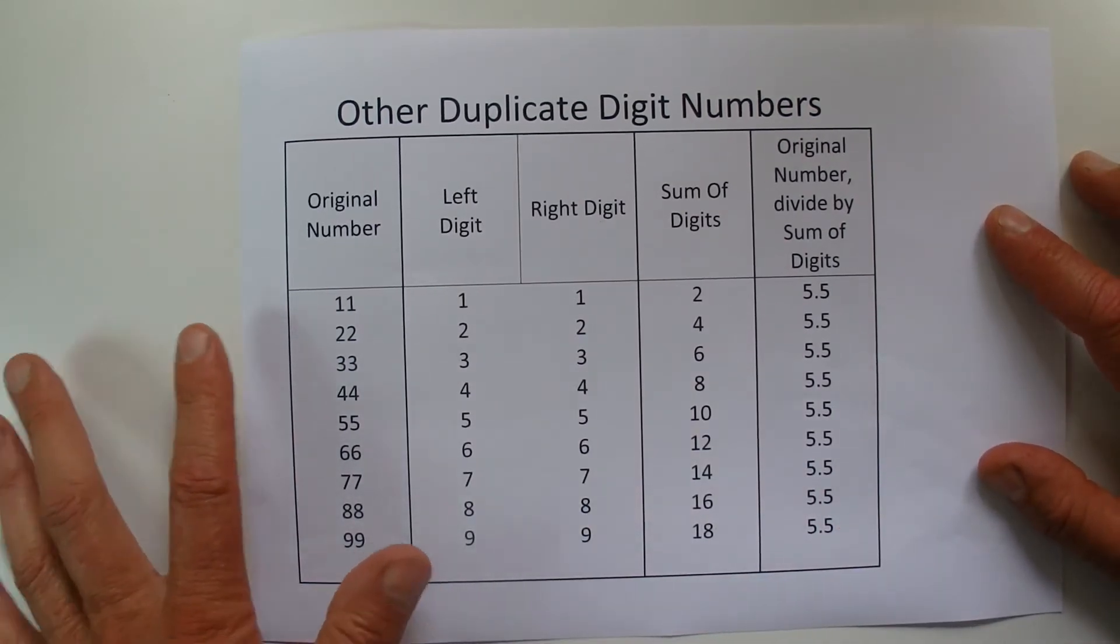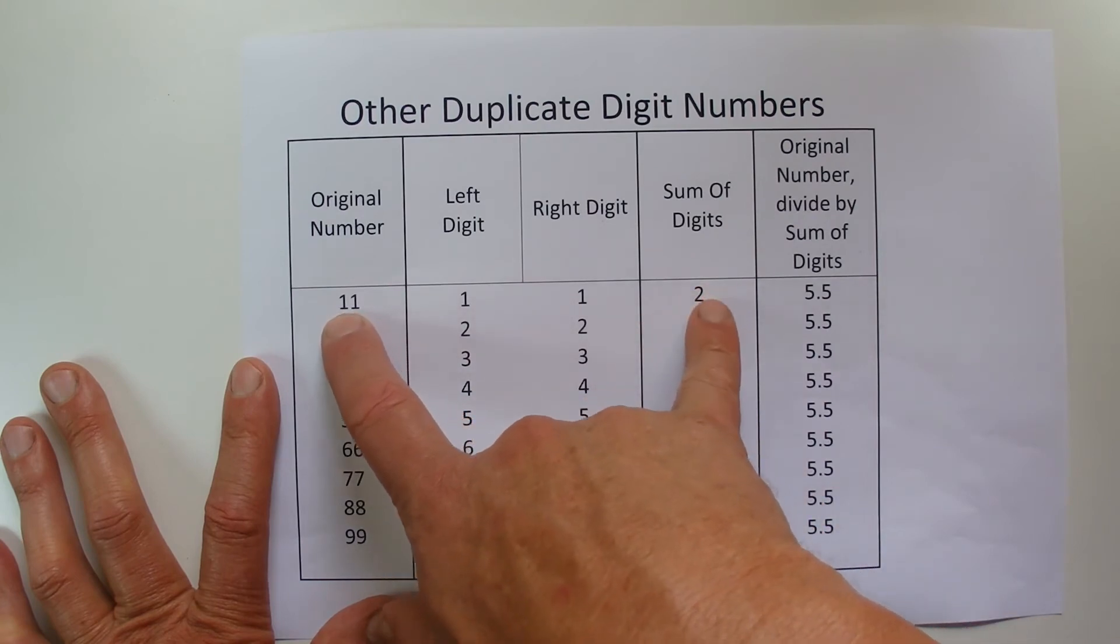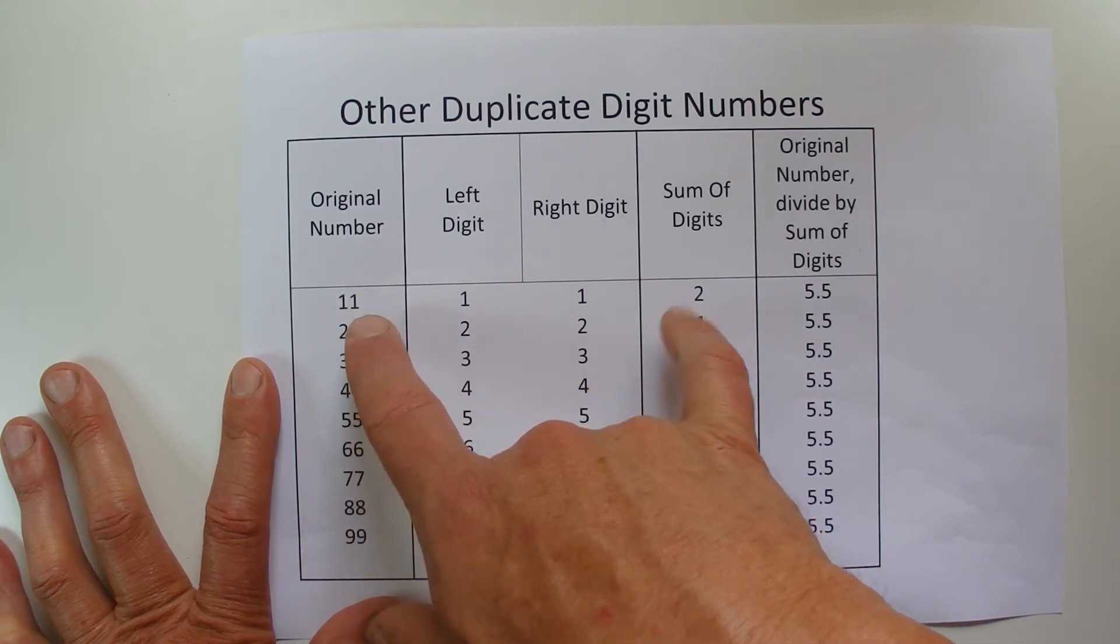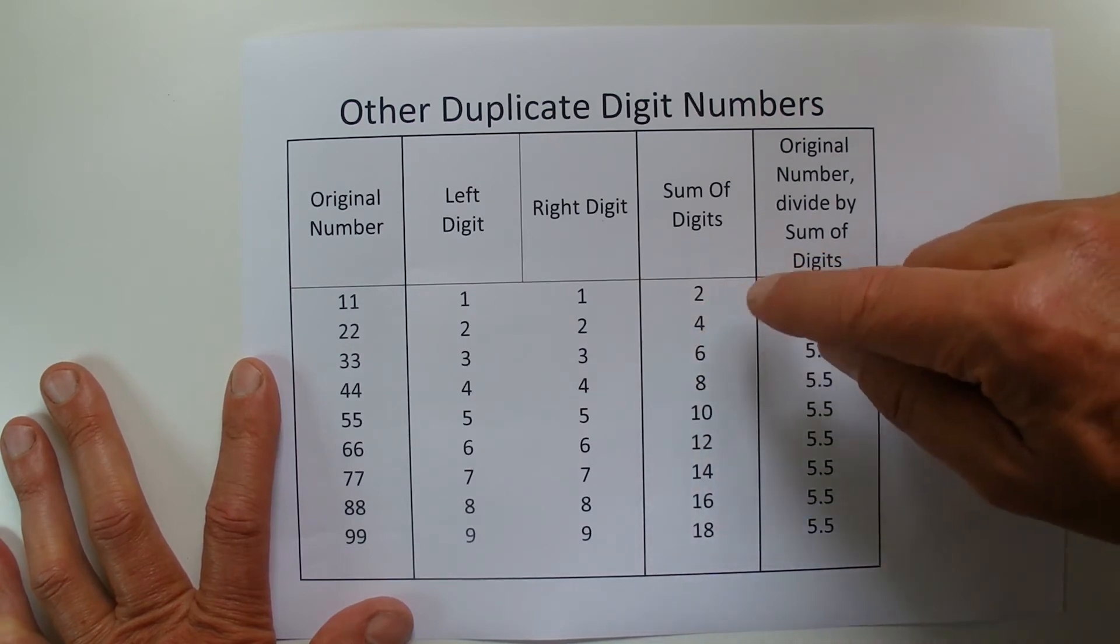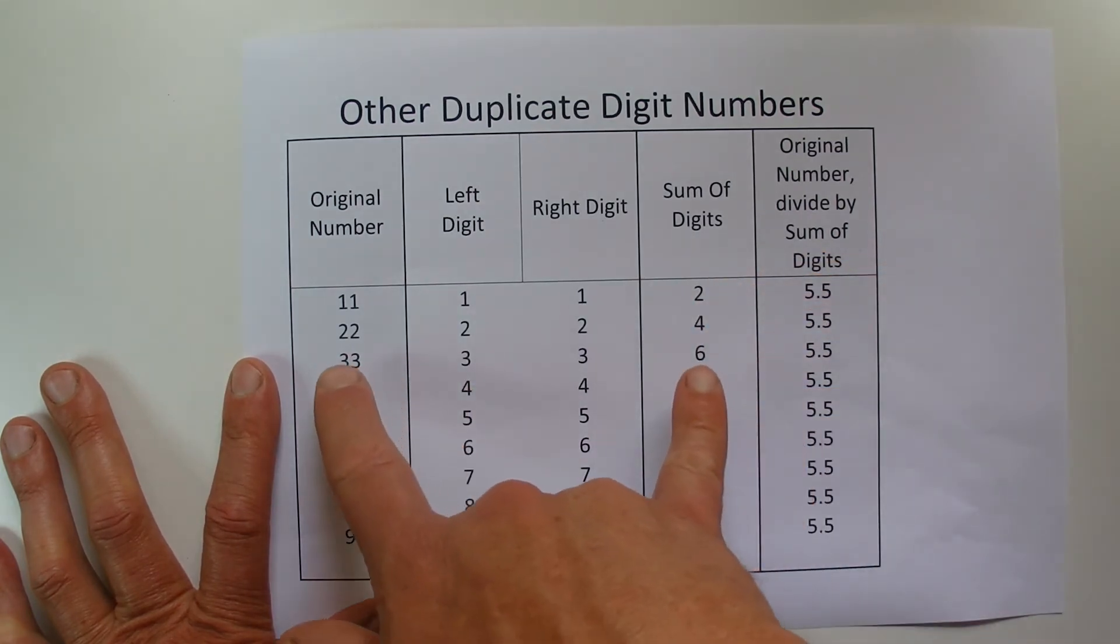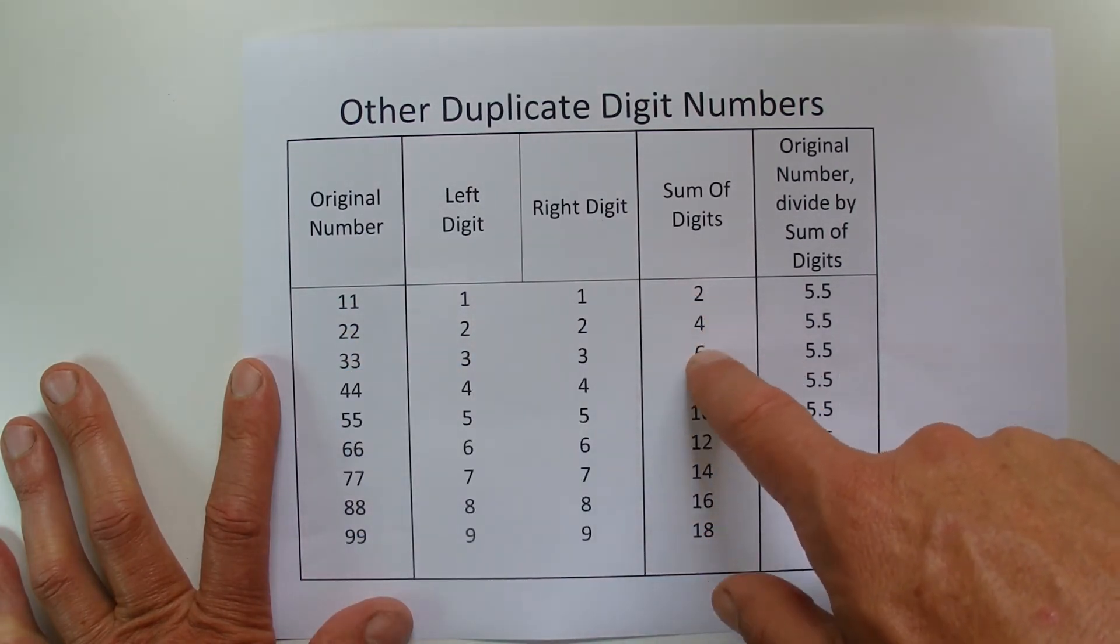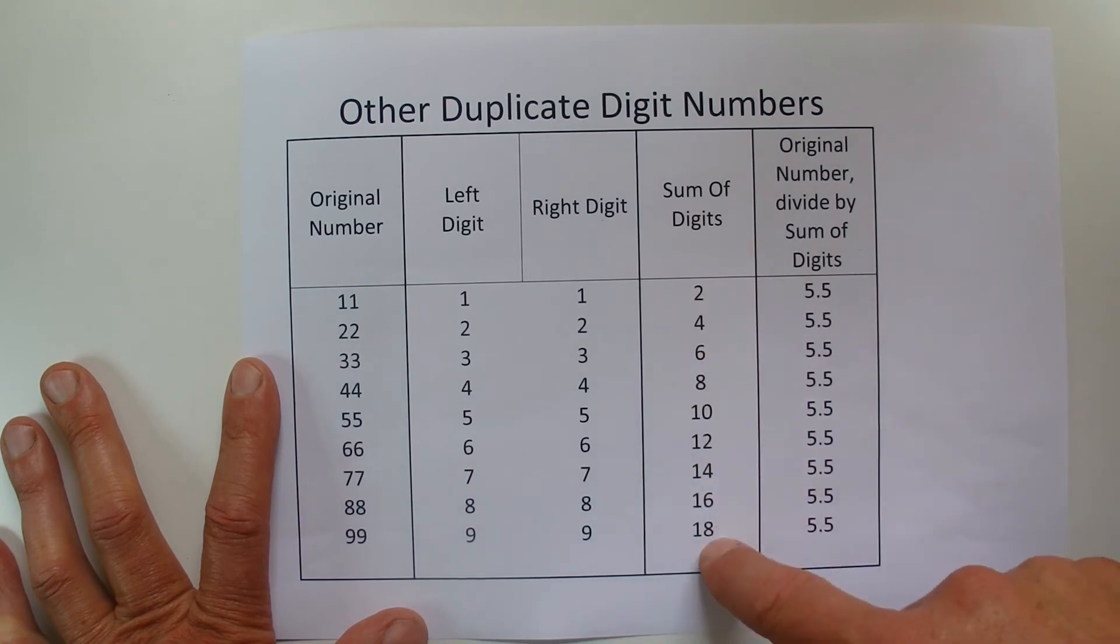And I think this table here will help you understand what's actually happening in this calculation. Because if you see there 11, which you divide by 2, if you go to 22, well, if you multiply 11 by 2, you get to 22. And then the sum of the digits also increases by that multiply by 2. So 2 times 2 is 4. And you get to 33. 11 times 3 is 33, and 2 times 3 is 6. And all the way down to 99. 11 times 9 is 99, 2 times 9 is 18.